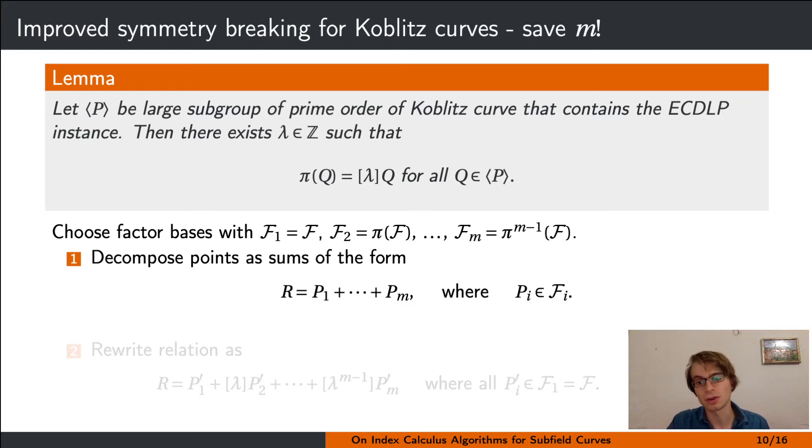Now we proceed as follows. We first decompose points as sums of factor base elements where we force each point to be in a different factor base. This gives the full m factorial gain in symmetry breaking. Using the lemma, we can then rewrite the relation as one which consists purely of factor base elements in one of the factor bases, say the first one. As a consequence, we save the full factor m factorial due to symmetry breaking, but we do not inflate our factor base at all.